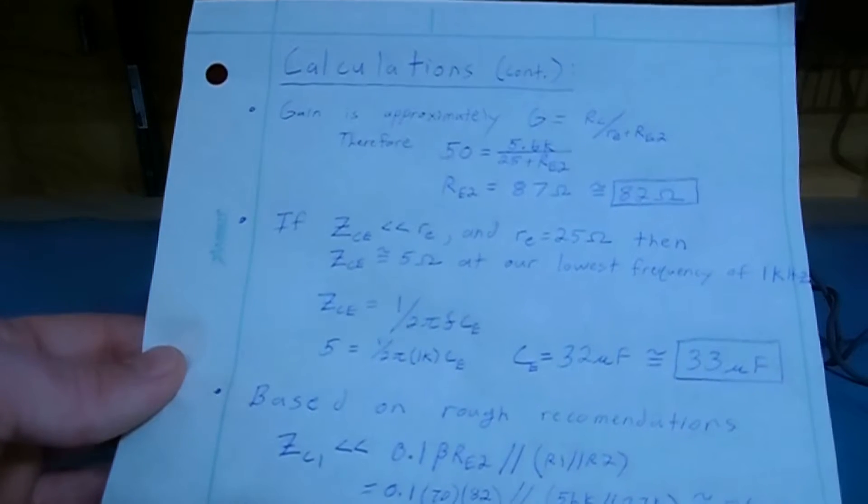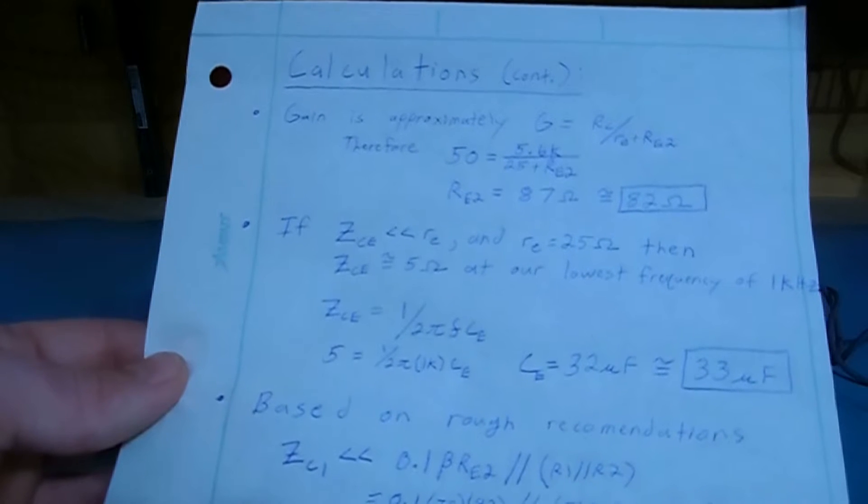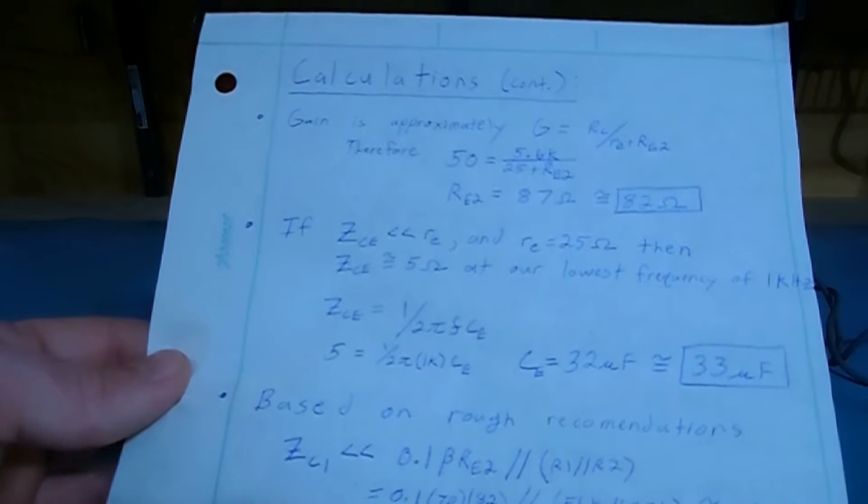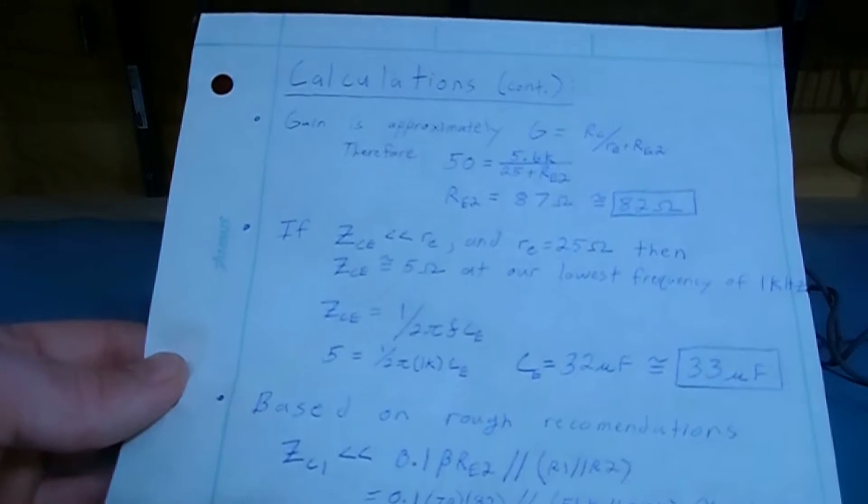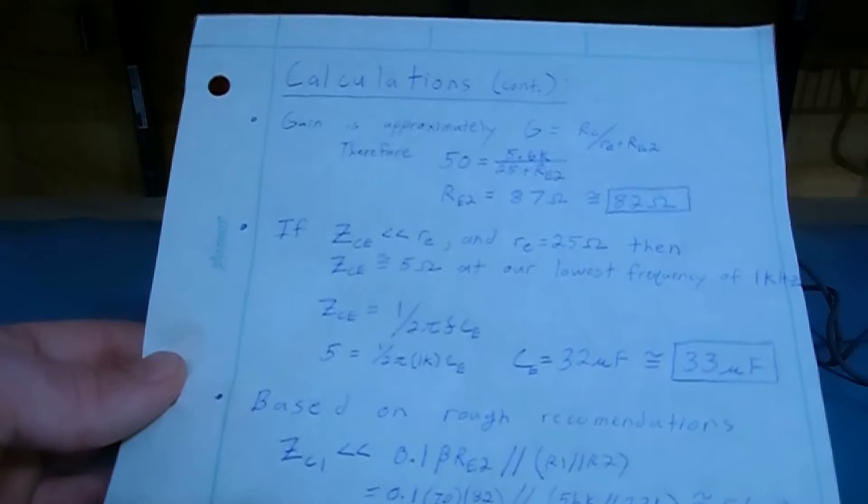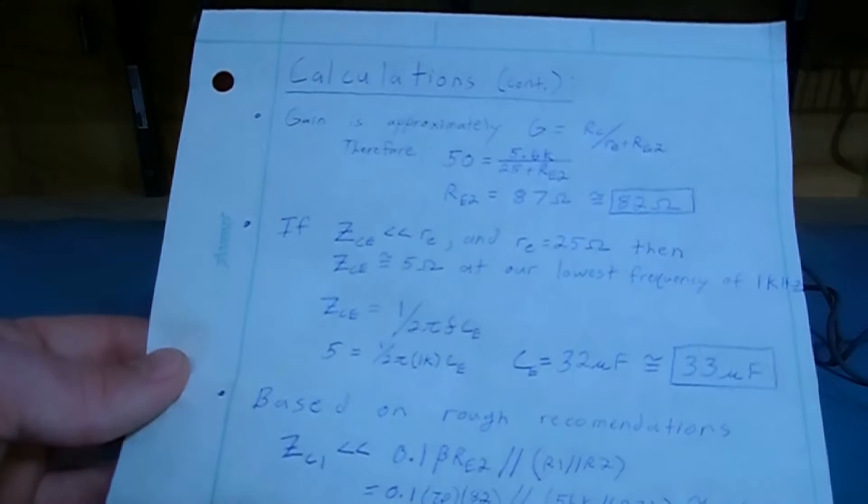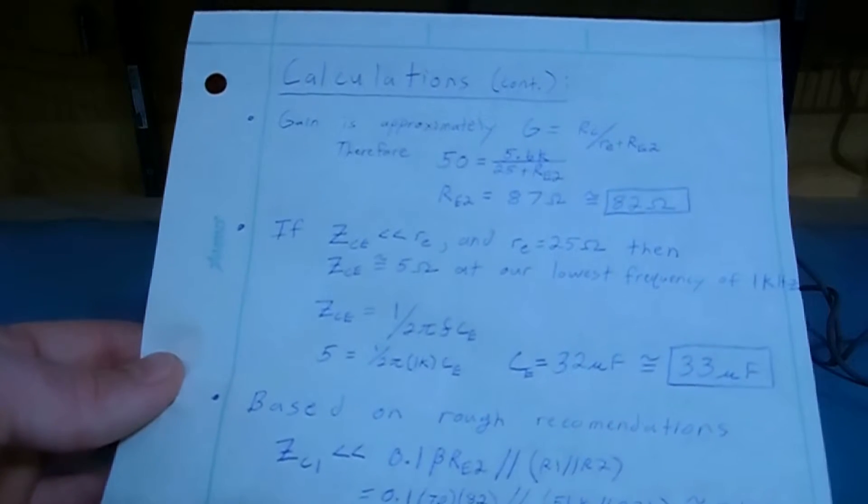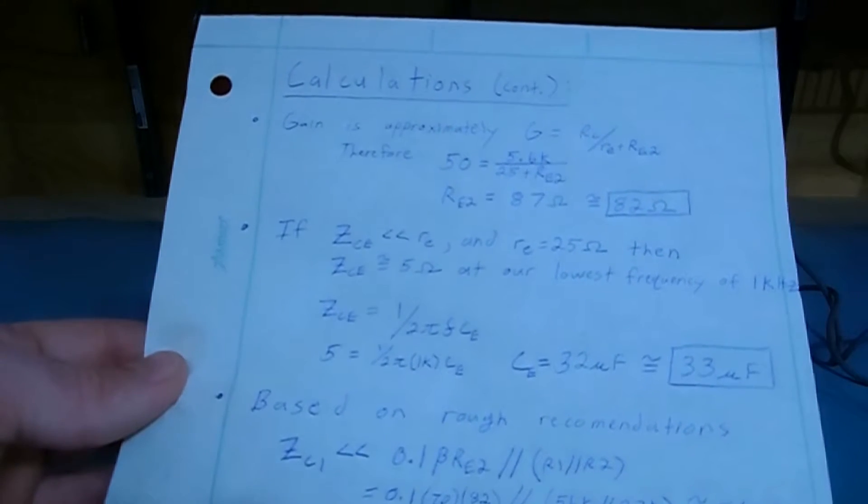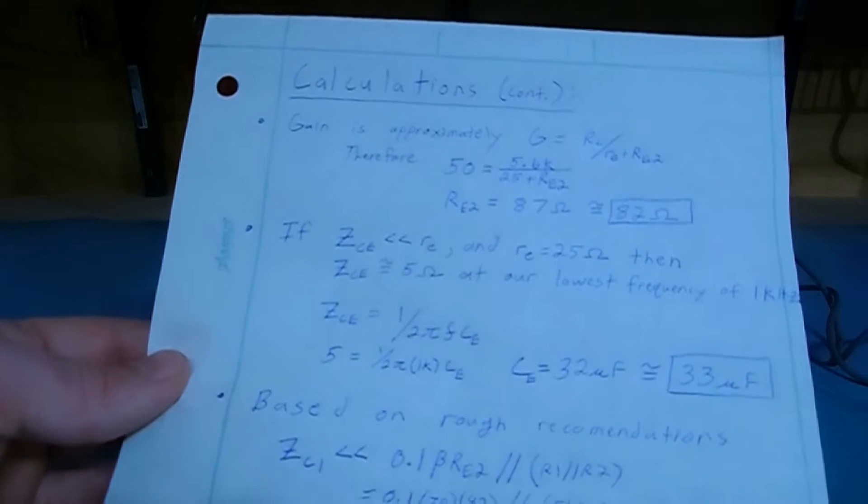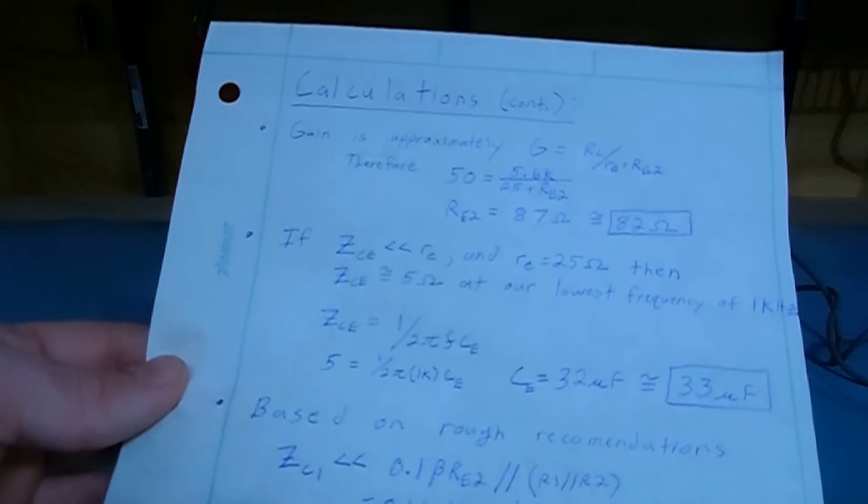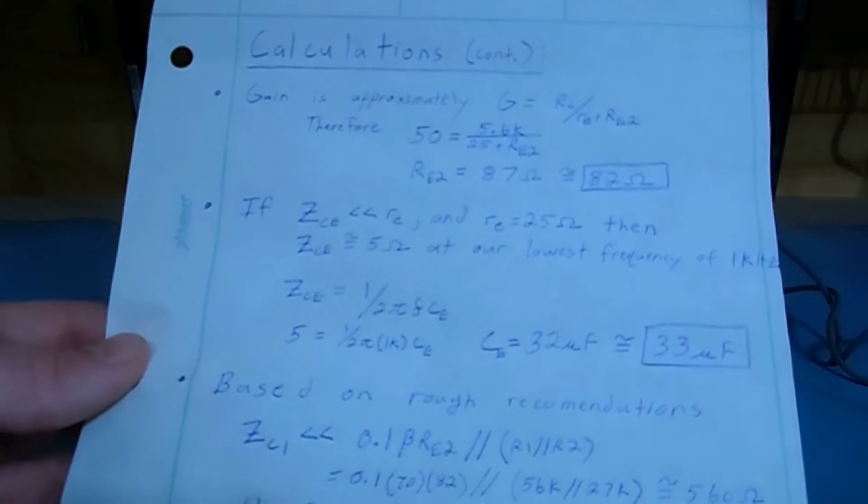Using the equation for a capacitor's impedance, which is impedance equal to 1 divided by 2πFC, where F is our lowest frequency of interest, we substitute those values in of 5 ohms and 1 kilohertz, and we solve for CE, we get 33 microfarads for our emitter capacitor value.